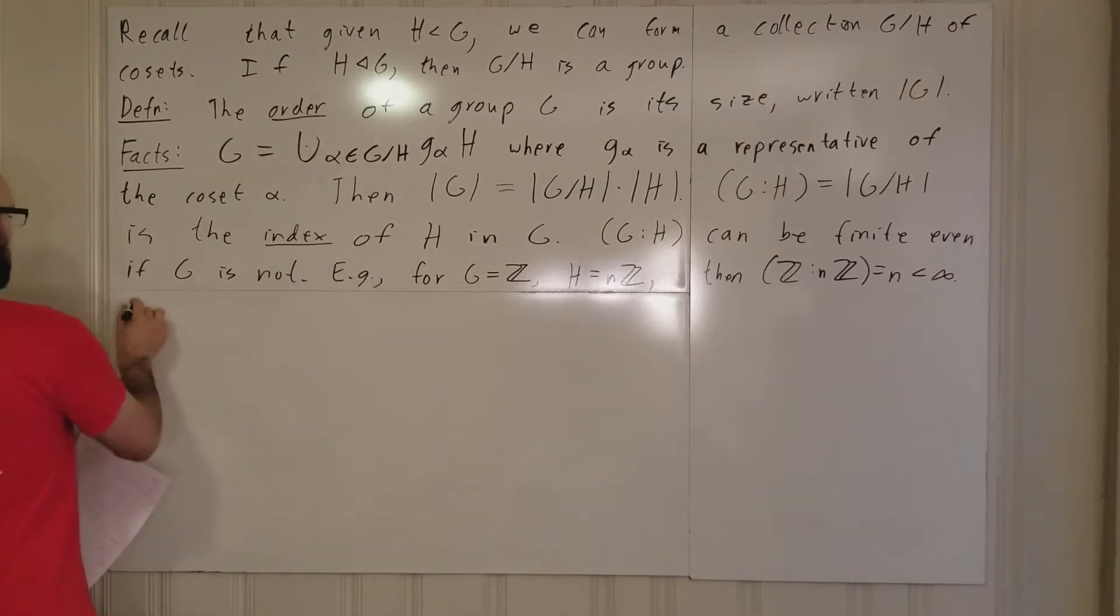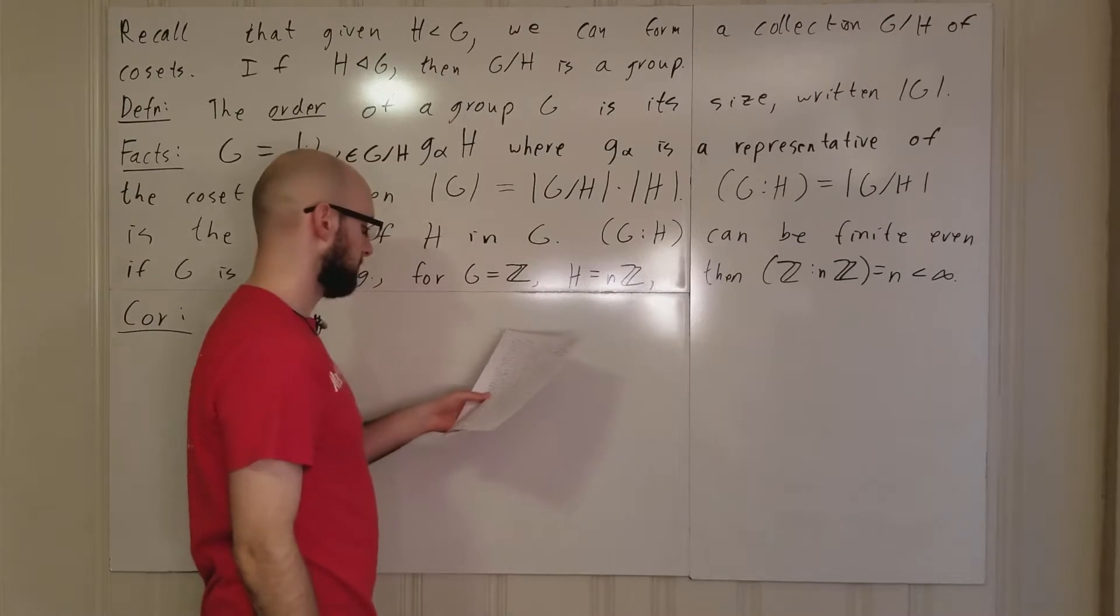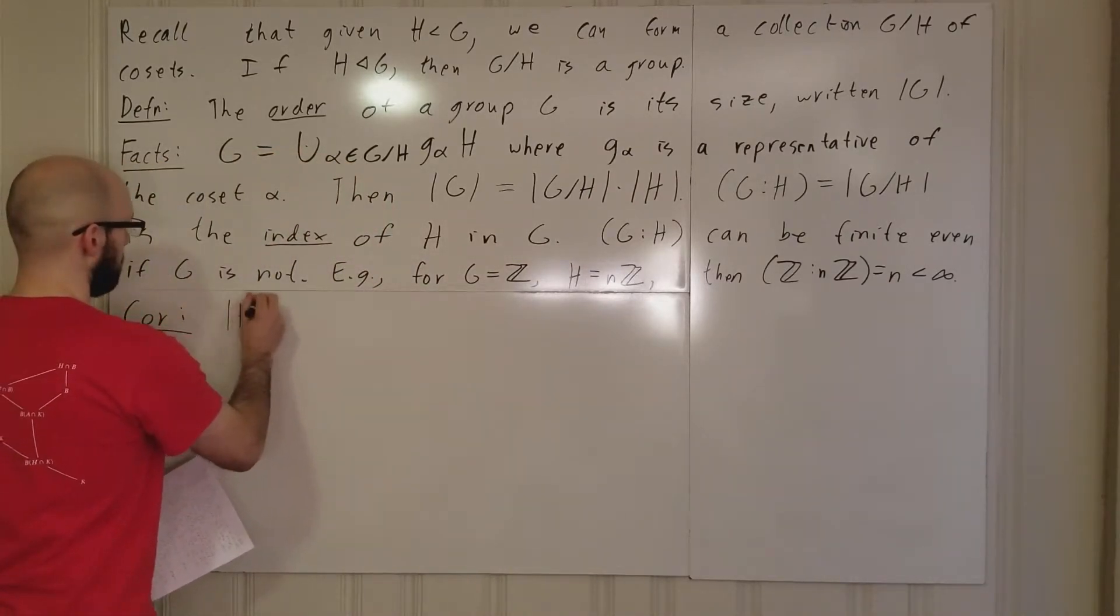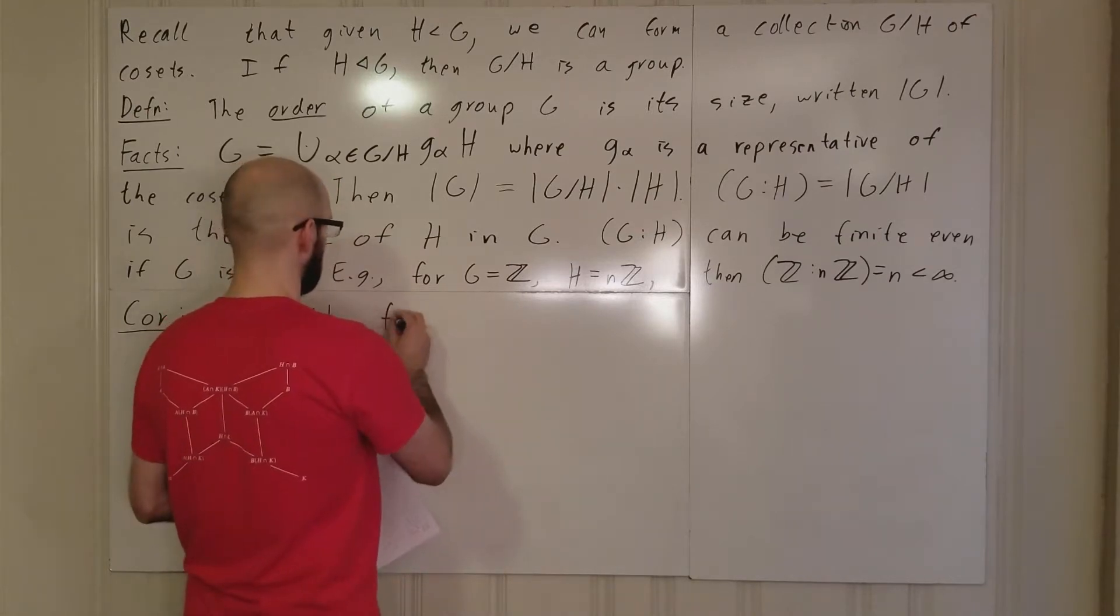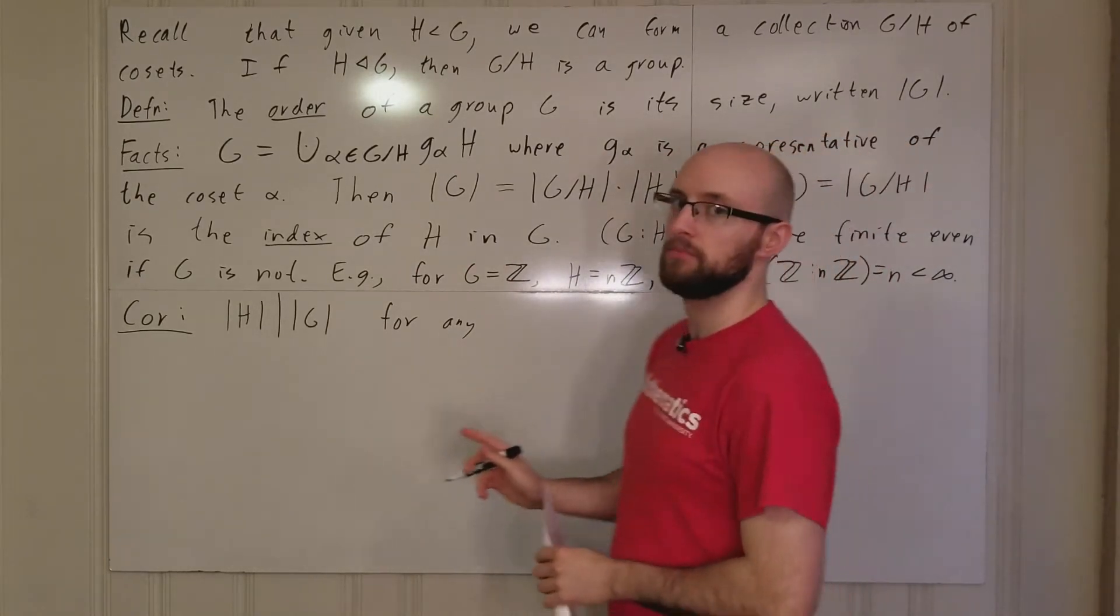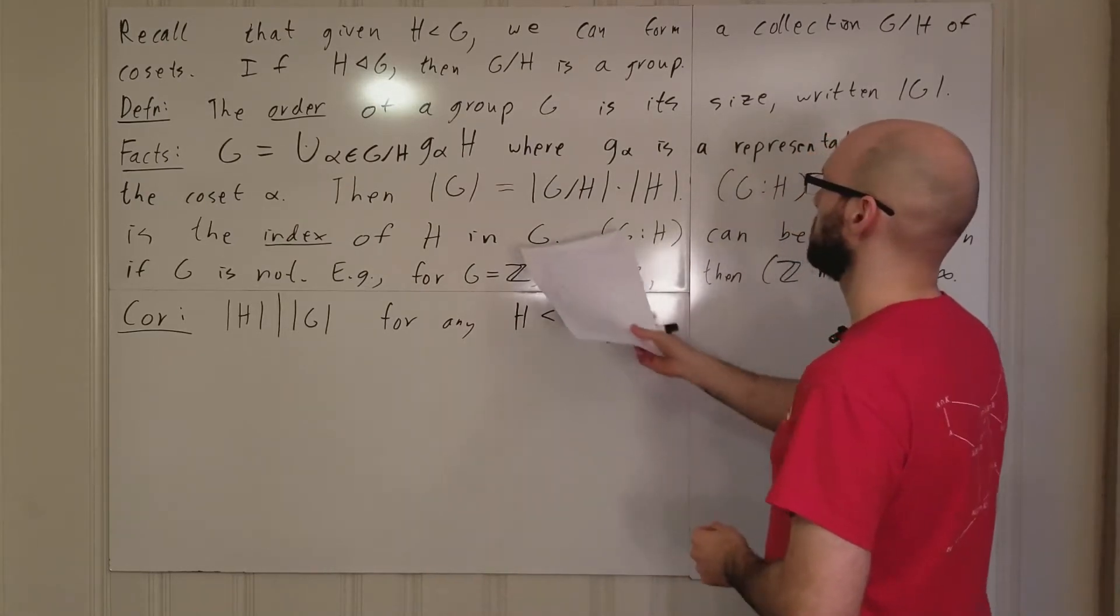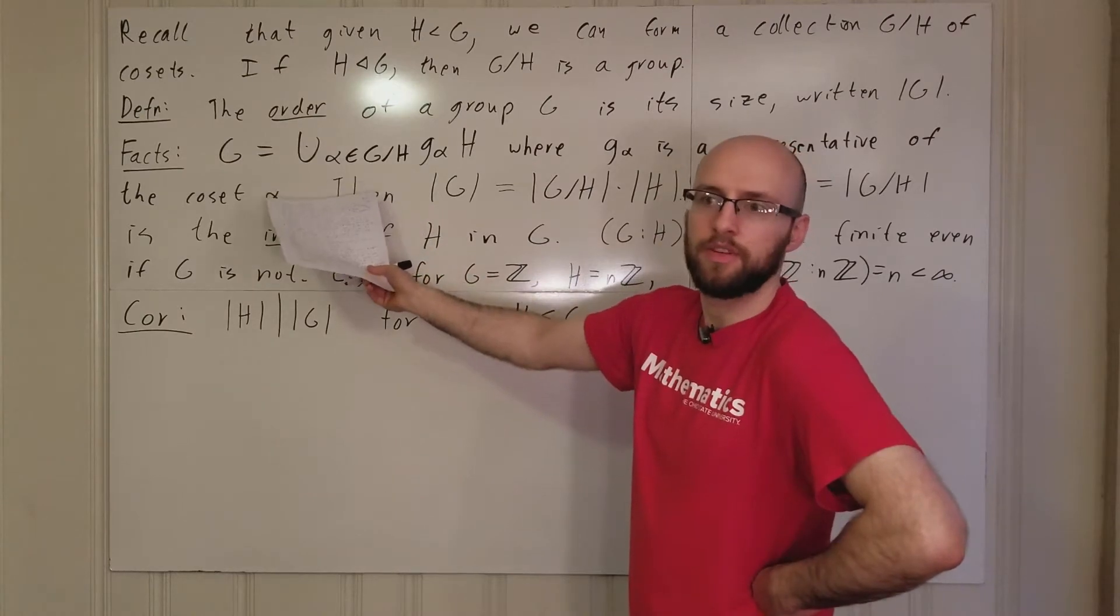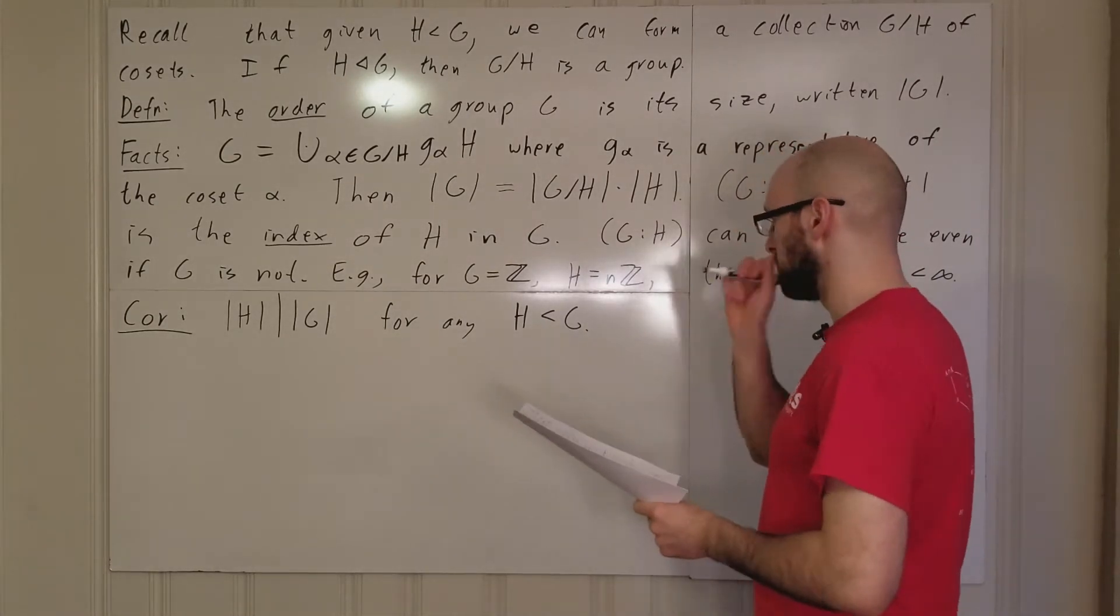That's that. Then we have a corollary. We have a subgroup H, and |H| times |G/H| equals the order of G. So the order of H divides the order of G, and that holds for any subgroup H of G. This equality holds even if G/H isn't a group—even if it's just a set, it's still a collection of equivalence classes, so everything works out fine.